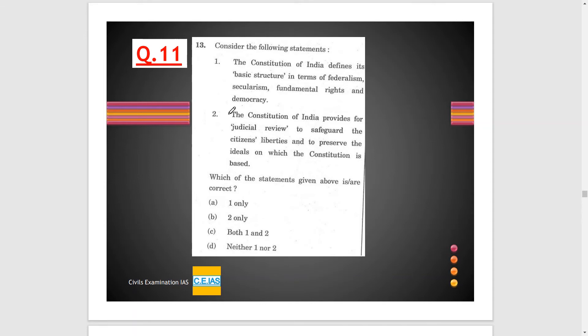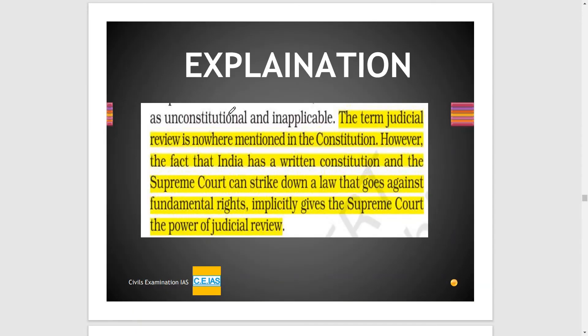Question 11 has two statements. Statement 1: The Constitution of India defines its basic structure in terms of federalism, secularism, fundamental rights and democracy. Statement 2: The Constitution of India provides for judicial review to safeguard citizens' liberties and to preserve the ideals on which the constitution is based. In the explanation, we can see that the term 'judicial review' is nowhere mentioned in the constitution.